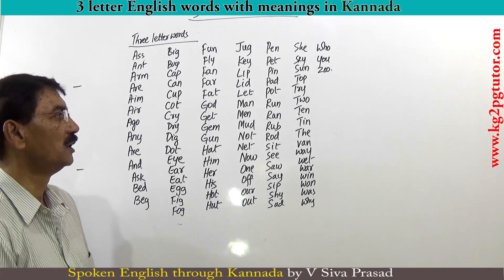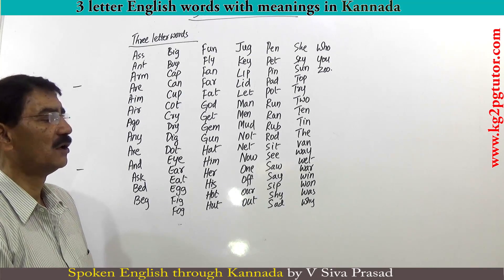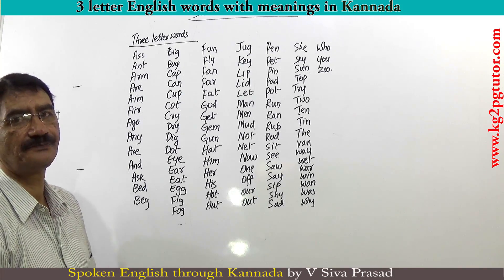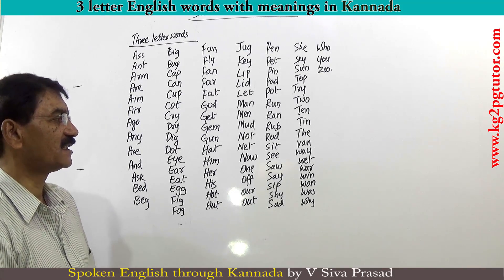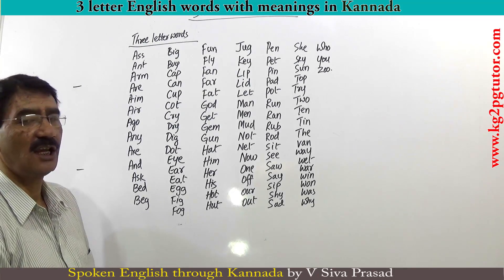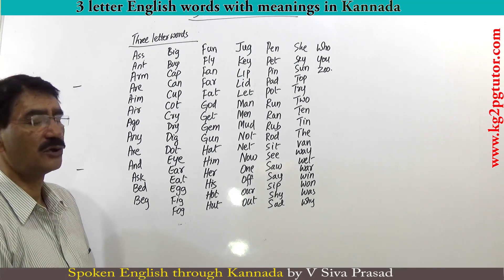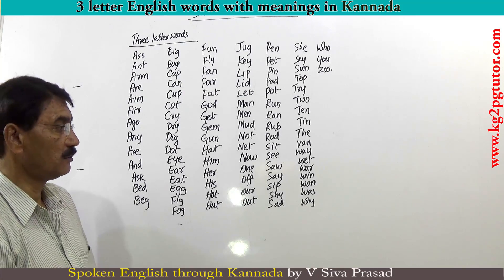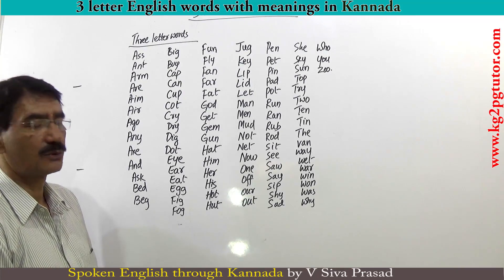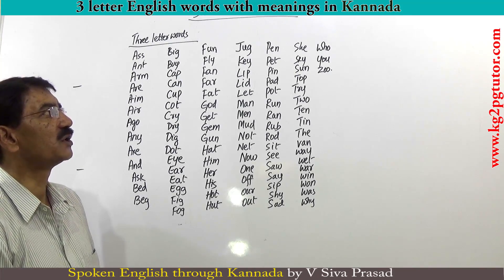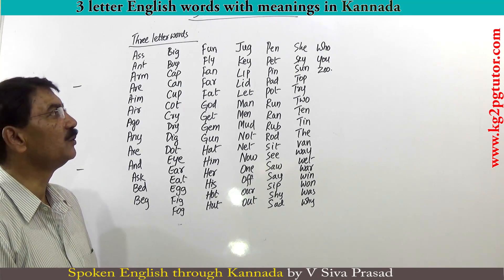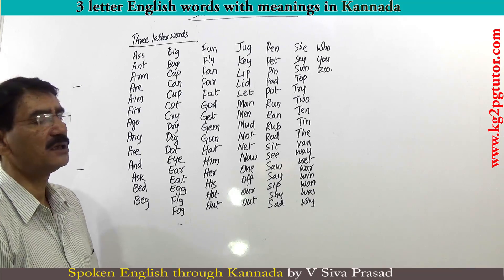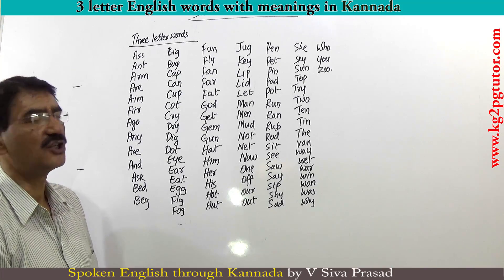RUN (odu/run), RAN (odiddha/ran), RUB (hacchu/rub), ROD (kambi/rod), SIT (kuru/sit), SEE (nodu/see), SAW (nodiddhu/saw), SIP (gutuku/sip), SHY (naajukhe/shy), SAD (dukka/sad), SHE (avalu/she), SKY (akash/sky), SUN (sourya/sun).